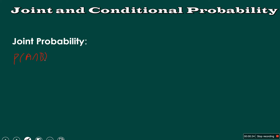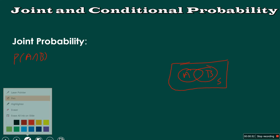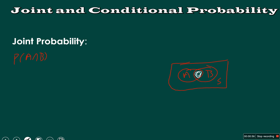If we look at a Venn diagram, we can see A and P(A), P(B). Here we have the intersection part between them. The probability of this intersection part equals probability of A plus probability of B minus probability of A union B.